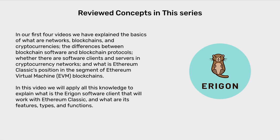Reviewed concepts in this series. In our first four videos, we explained the basics of what are networks, blockchains and cryptocurrencies; the differences between blockchain software and blockchain protocols; whether there are software clients and servers in cryptocurrency networks; and what is Ethereum Classic's position in the segment of Ethereum Virtual Machine blockchains. In this video, we will apply all this knowledge to explain what is Eragon, the Eragon software client that will work with Ethereum Classic, and what are its features, types and functions.